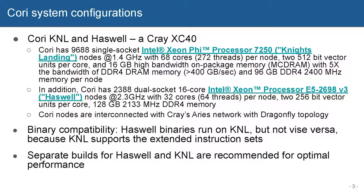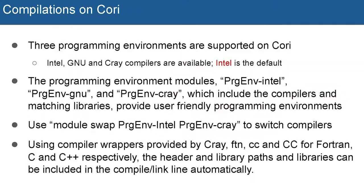For optimal performance, we recommend you build separate binaries for each type of processor. On Cori we have three supported programming environments: Intel, GNU, and Cray. Among these three, Intel is the default.